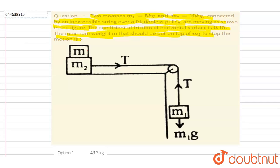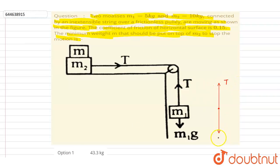Let's say mass m is put on m2, and we want the minimum value so that it does not move. So we want the acceleration of the entire system to be zero. For zero acceleration, the tension force acting on m1 — m1g acts downward and tension T acts upward. Since m1g is 50 newton, the tension in the string must equal 50 newton.